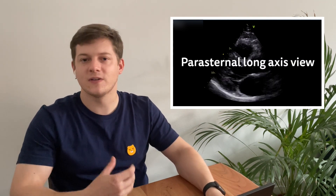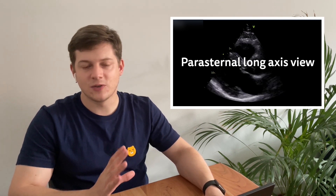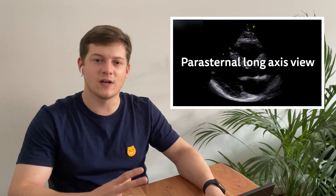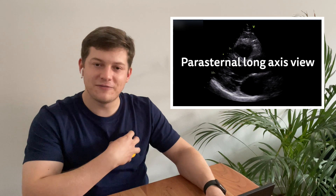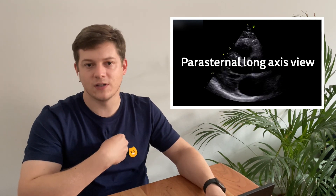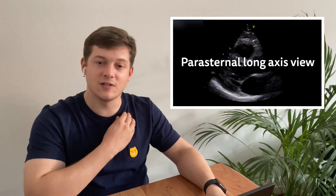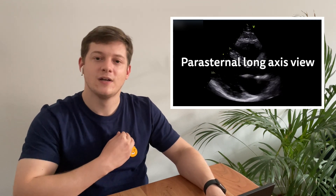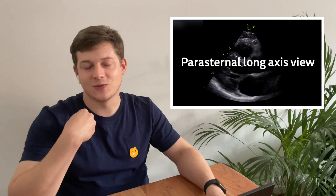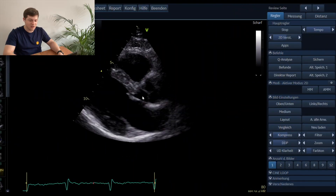The first view we are going to talk about is the parasternal long axis view. It is called the parasternal view because you start scanning at the left side of the sternum — a bone located here. You start below the clavicle and move downwards with the transducer rotated toward the right shoulder, and then you get this view of the heart.